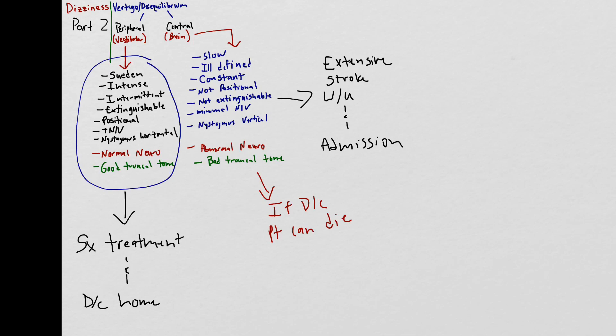However if I have a patient who tells me very clearly that the symptoms were sudden, intense, intermittent, I can see that they're extinguishable, the patient is now asymptomatic, he reports a very clear positional component and that when he gets the symptoms he's very nauseous to the point of vomiting, has a completely normal neuro exam and good truncal tone, I have now convinced myself that this patient has peripheral vertigo and I would not do an extensive workup on that patient.